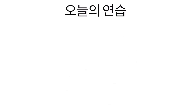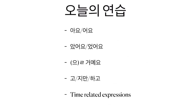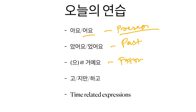In today's practice session we will be translating Korean sentences into English. We will be practicing these grammar elements: ayo/ayo which is present tense ending, asayo/osayo ending, ilko-ayo ending which is future tense, and asayo/osayo which is past tense. We also have some connectors: go, jiman, hago, and we will have a lot of time-related expressions.